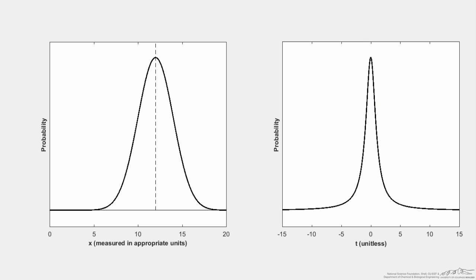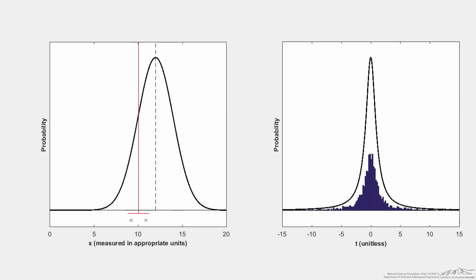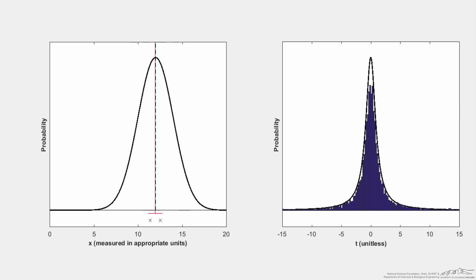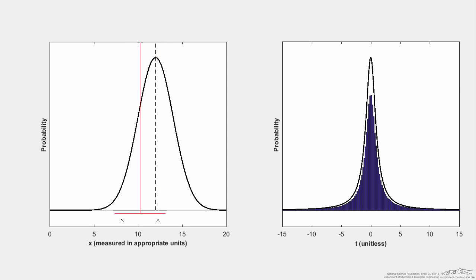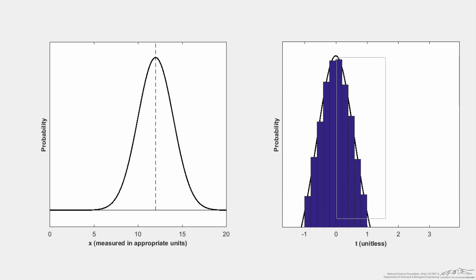Now I'll run the simulation — still with sample size two — upwards of 10,000 different iterations. When I run it, we observe the buildup of t values that eventually reaches a t-distribution with one degree of freedom, which corresponds to a sample size of two. Running it even more precisely with a million iterations — a million samples each of two measurements — we get a very, very close representation of the Student t-distribution.